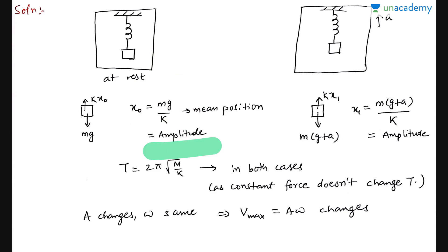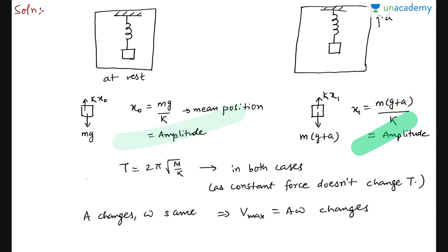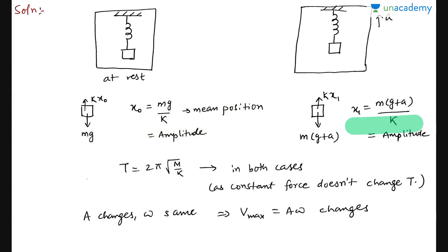In the second case, everything is the same but the lift is also accelerating. When we observe the spring-block system from inside the lift, a pseudo force acts — and since acceleration is upward, pseudo force acts downward in the same direction as mg. You should know that when a constant force acts on any spring-mass system, the mean position shifts but the time period does not change. If force varies with displacement, then it changes, but a constant force does not change the time period of a spring-block system — although it does change for a pendulum.